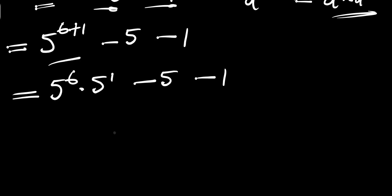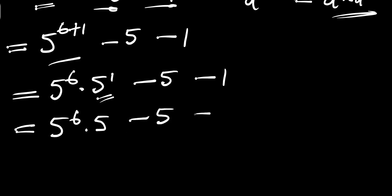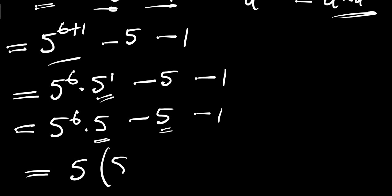Since 5 to the power of 1 equals 5, we have 5 power 6 times 5, minus 5, minus 1. We have a 5 here and a 5 here, so we can factor it out. This gives us 5 times (5 power 6 minus 1), then minus 1 outside the bracket.